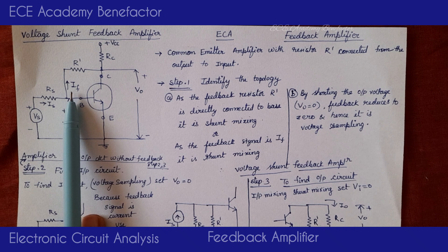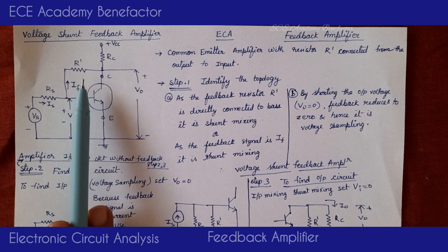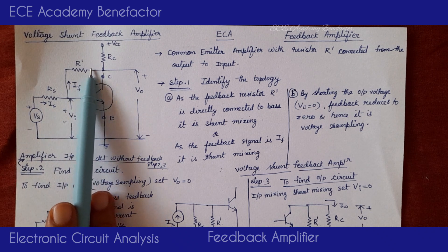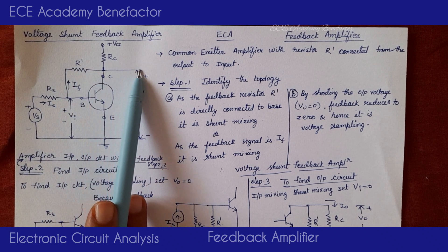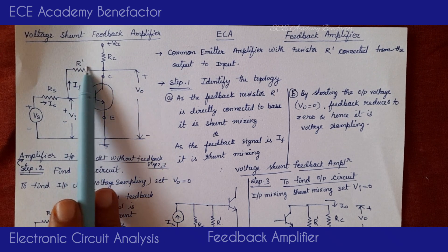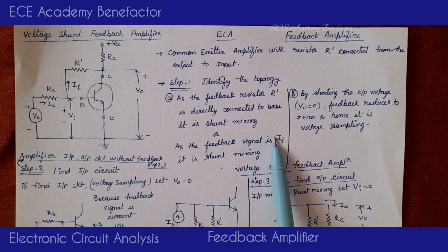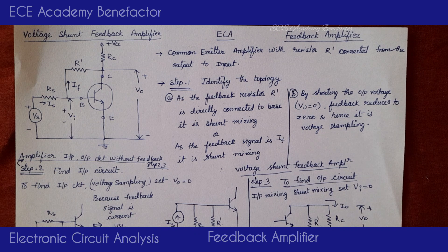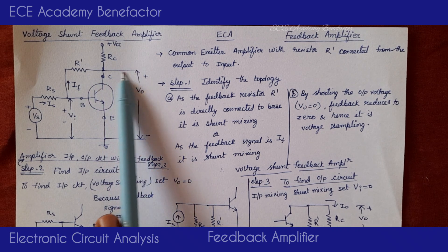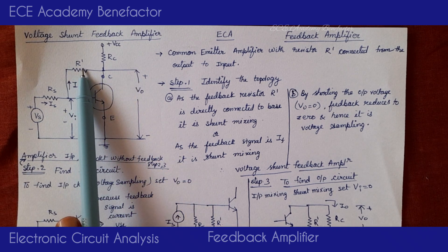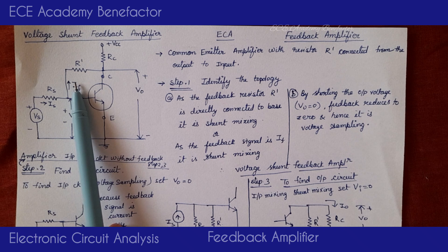Another way of proving shunt mixing: whenever you find a feedback resistor directly connected to the base, it is shunt mixing. The feedback resistor is the one connected from the output point to the input — here R' goes from collector to base, making it the feedback resistor. To determine the sampling type: if we short the output voltage, the feedback reduces to zero, hence it is voltage sampling.